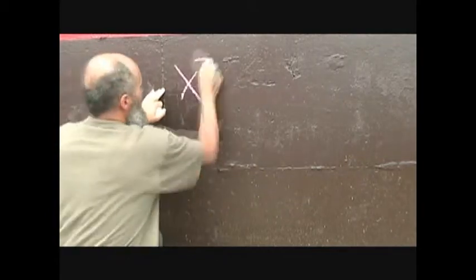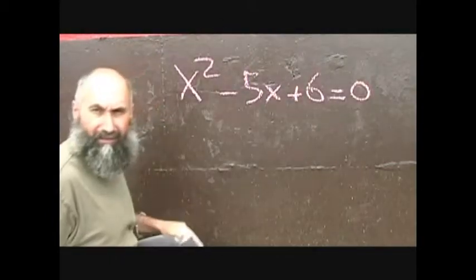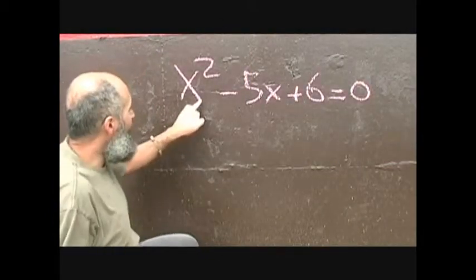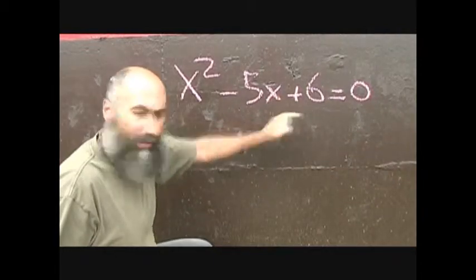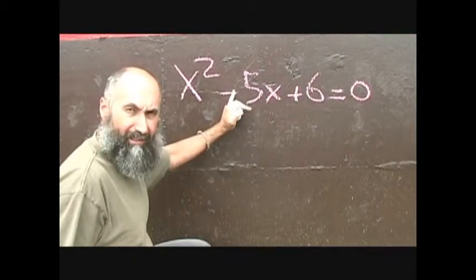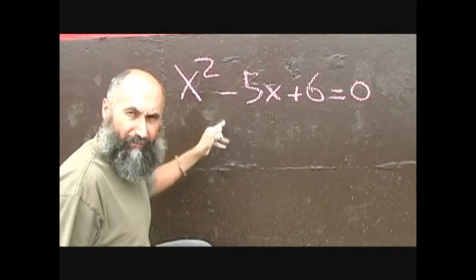We just did x squared plus 5x plus 6 equals 0. Now let's change it up slightly and see what happens with our results. Now we've got x squared minus 5x plus 6 equals 0. All I did was change the plus sign to a minus sign for this problem.